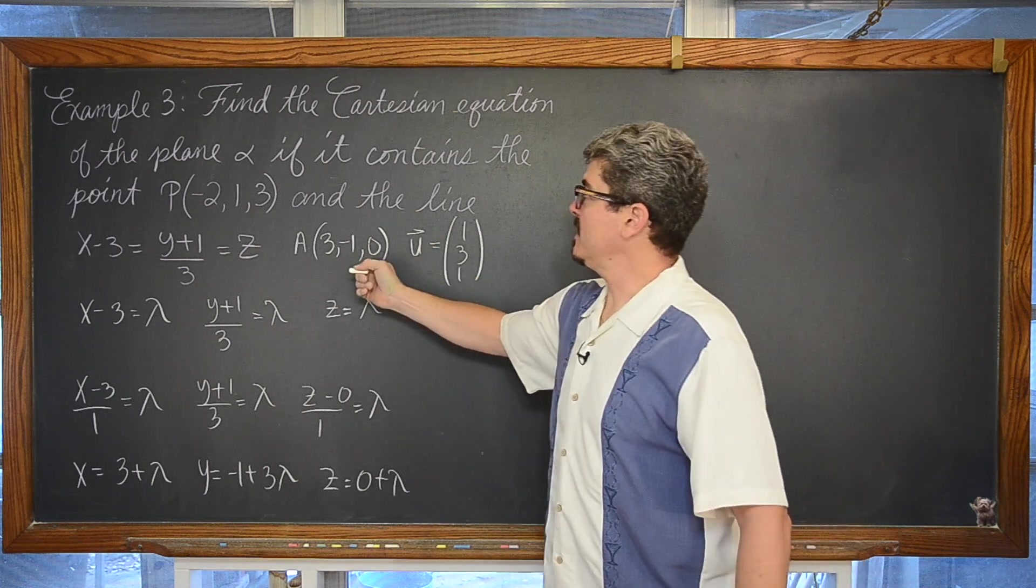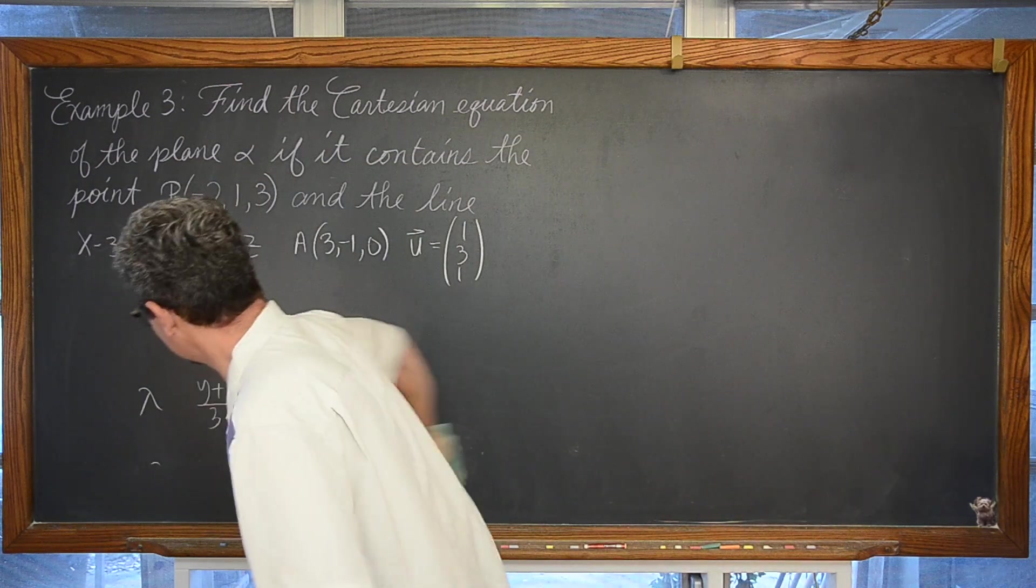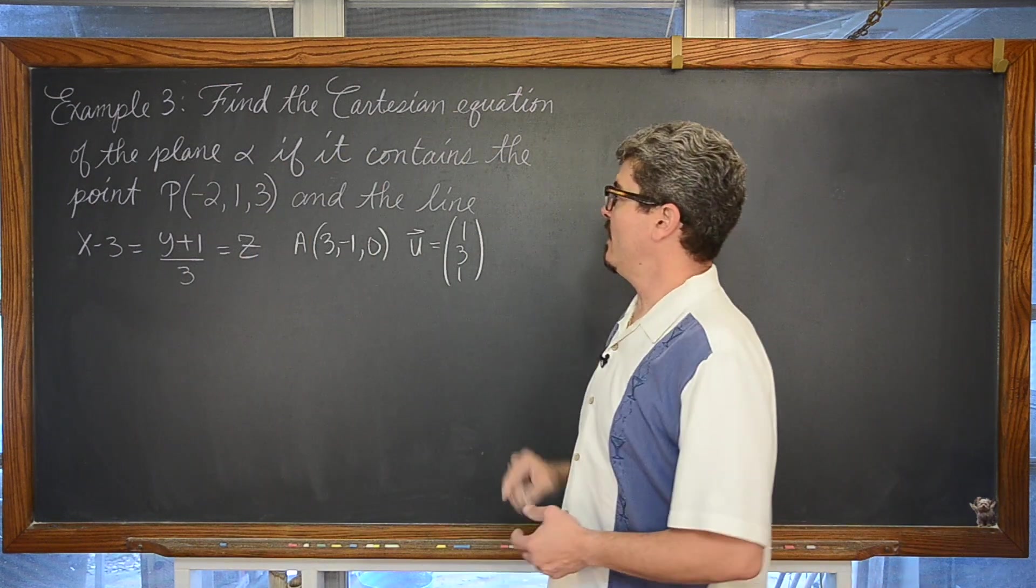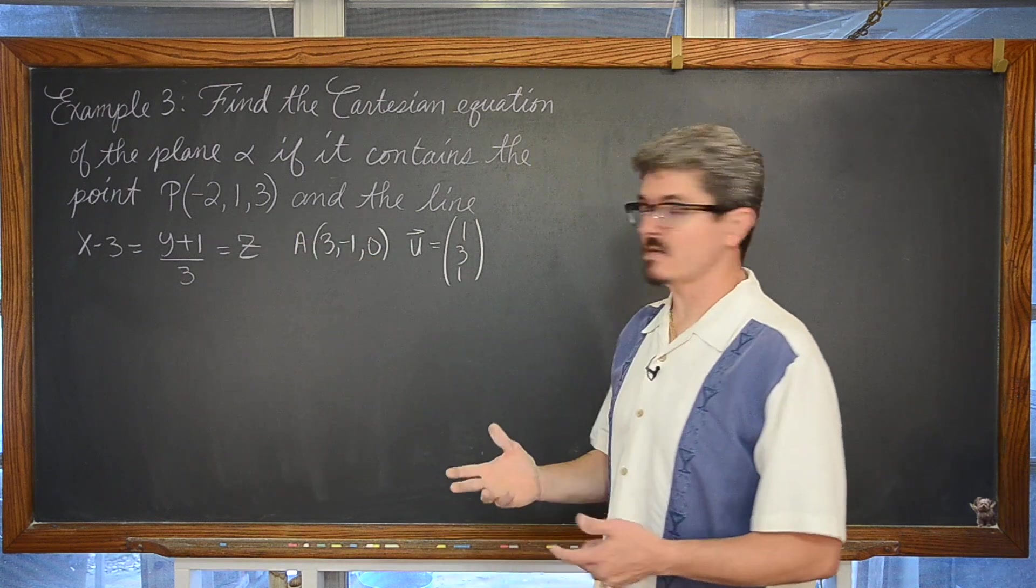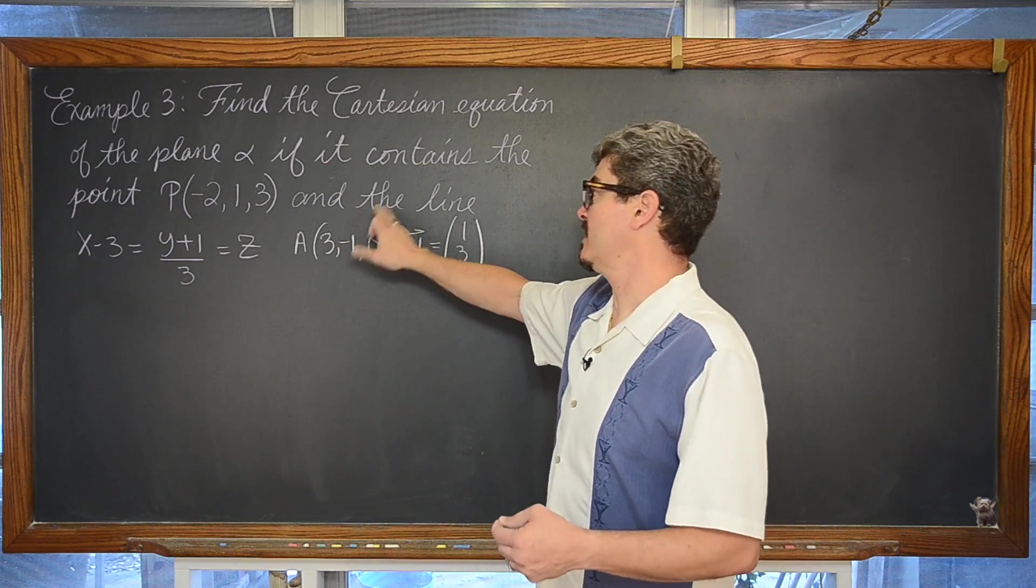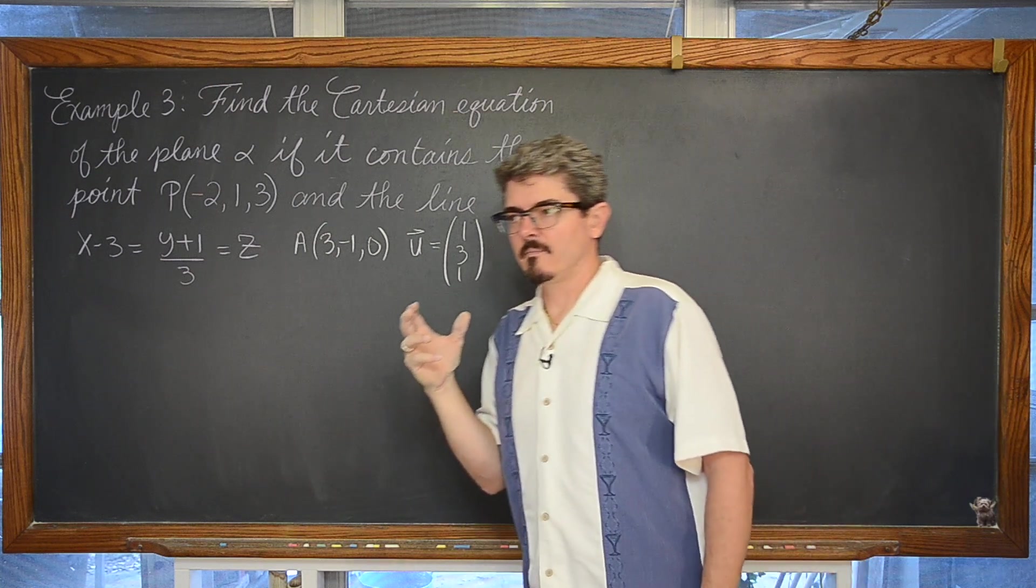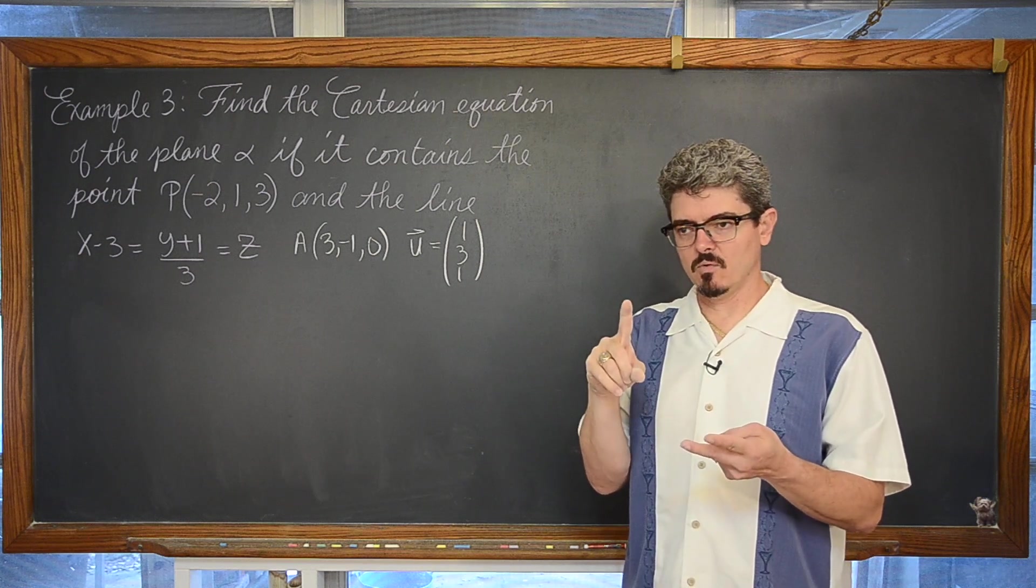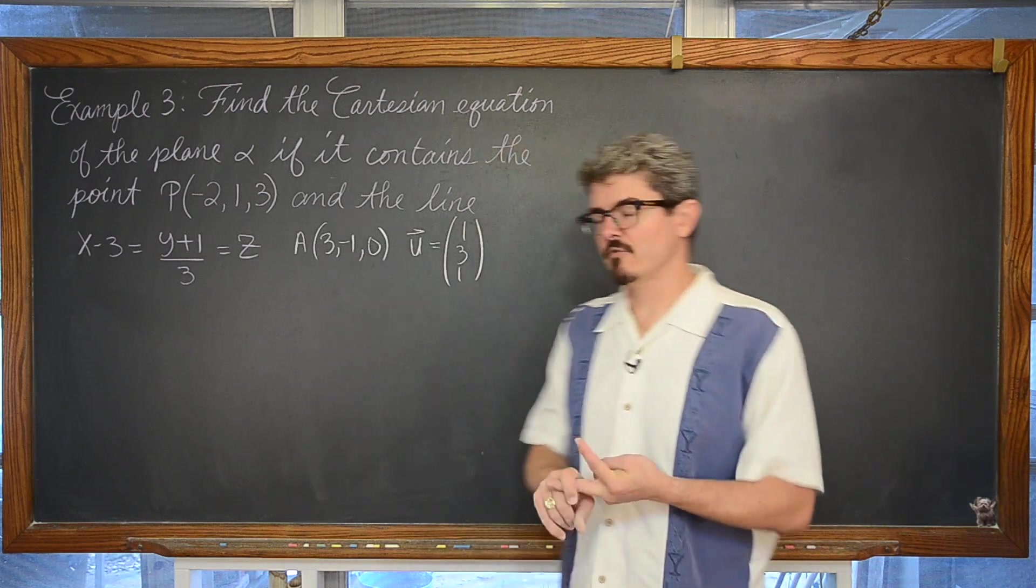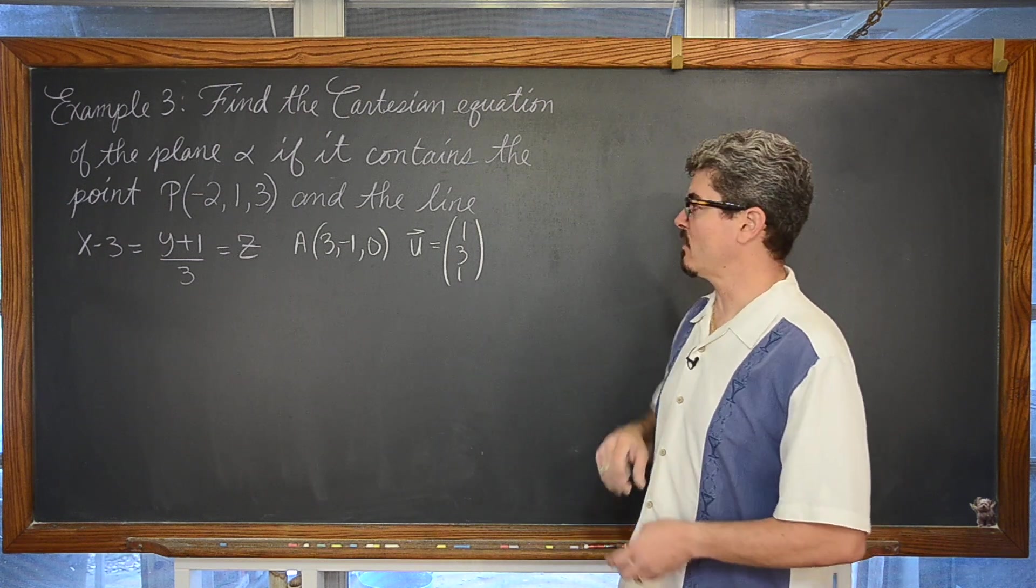So now we know a point and a direction. We now know for this plane alpha one point that is on the plane. And we have this other point, which is also in the plane because the plane contains the line. And we have a direction vector. Well, whether we are going to use a normal vector or the regular vector form for the equation of a plane, we need two non-collinear vectors. And right now we only have one directional vector for our plane, so we need another one.